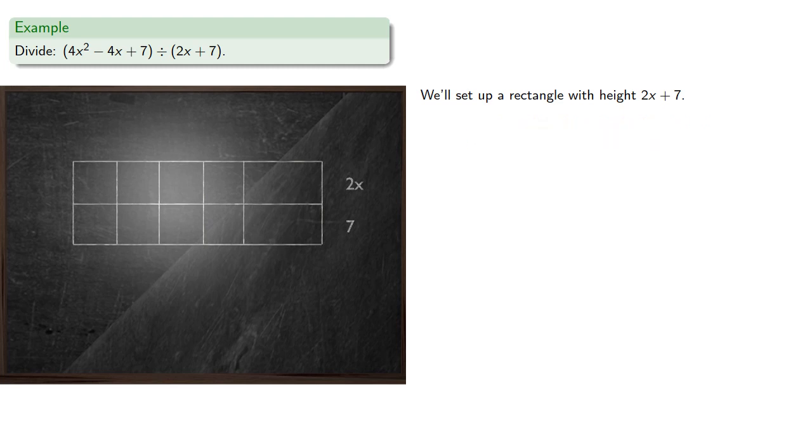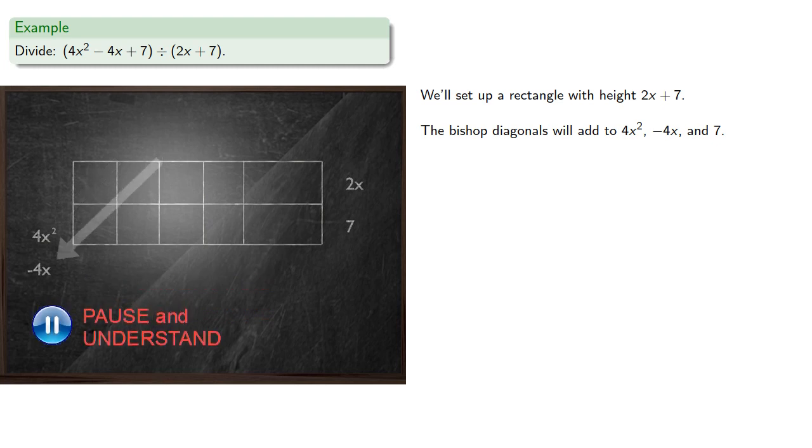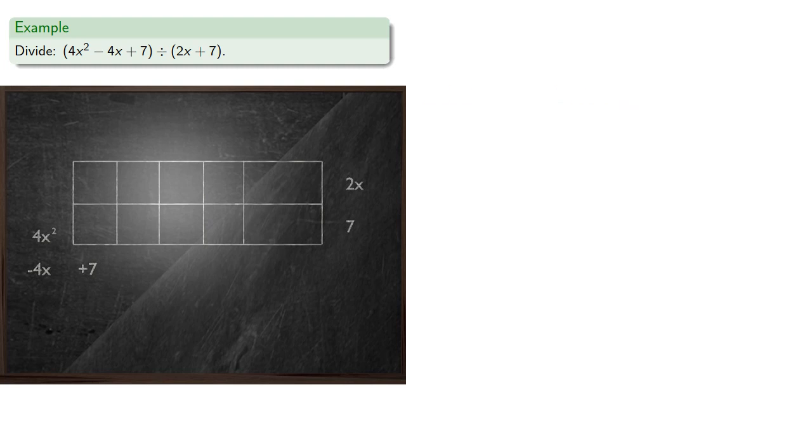Now the bishop diagonals will add to the terms of our dividend. So the first bishop diagonal will add to 4x squared. The next one to negative 4x. The next one to 7. And we have no more terms in our dividend, so we won't worry about the remaining bishop diagonals, at least not yet. Since the first bishop diagonal only has a single rectangle, the first rectangle must have the entire area 4x squared.